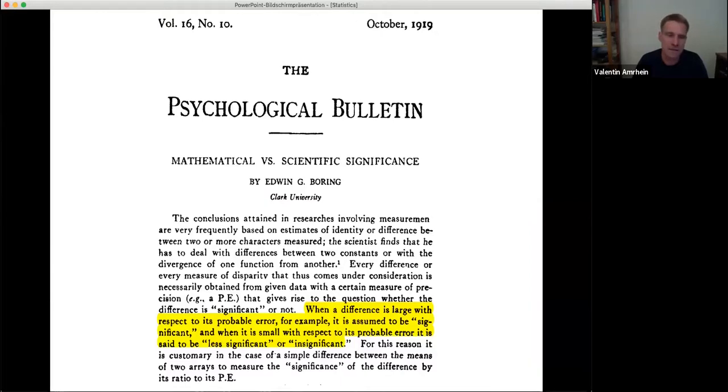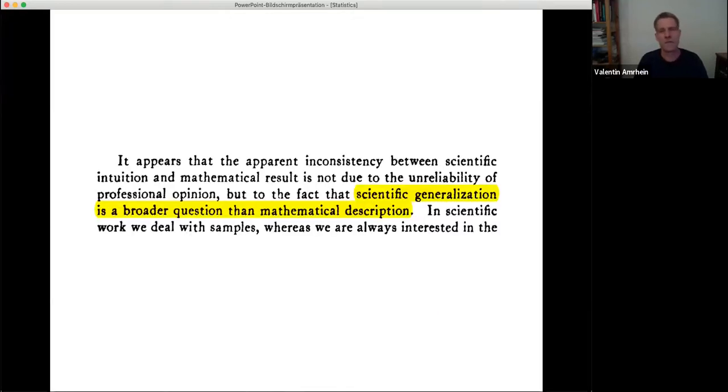As I said, it's absolutely not new, so nothing we say or write is new. The first paper I'm aware of that clearly said statistical significance is a problem was published almost exactly 100 years ago. Edwin Boring, who also, the term statistical significance was not invented by Fisher, it's actually older, also the p-value was not invented by Fisher, it's actually older. And this Boring says scientific generalization is a broader question than mathematical description, and that's basically the main topic of my talk.